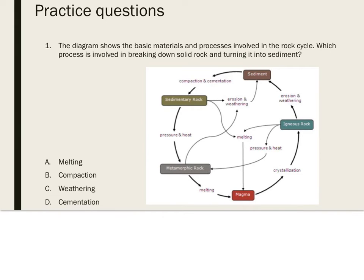Practice question one: the diagram shows the basic materials and processes involved in the rock cycle. Which process is involved in breaking down solid rock and turning it into sediment? Pause and look at your answer choices. Solid rock is broken down into sediment by the process of weathering. Erosion then carries small bits of rock via wind or water. Once deposited, material can be transformed into sedimentary rock by compaction and cementation. The answer is C: weathering.